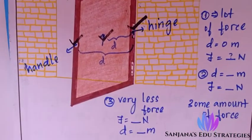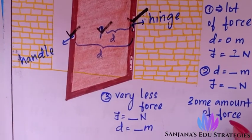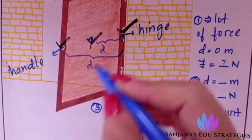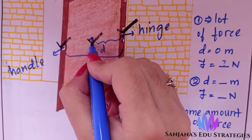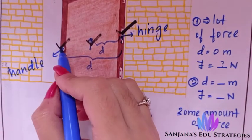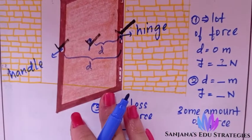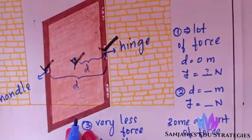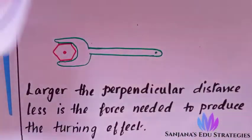To summarize the door example: a large amount of force is required at the hinge, some amount of force is required at the center of the door, and very little force is required at the handle. This is the first example of moment of force.